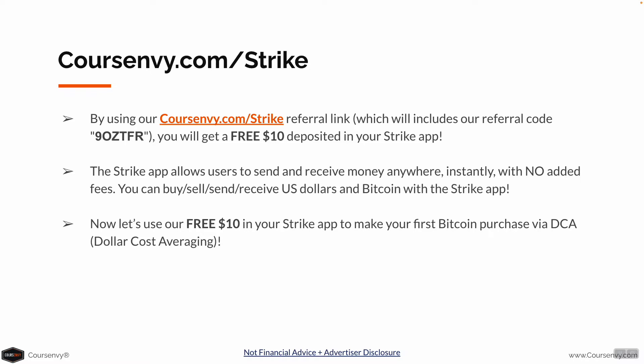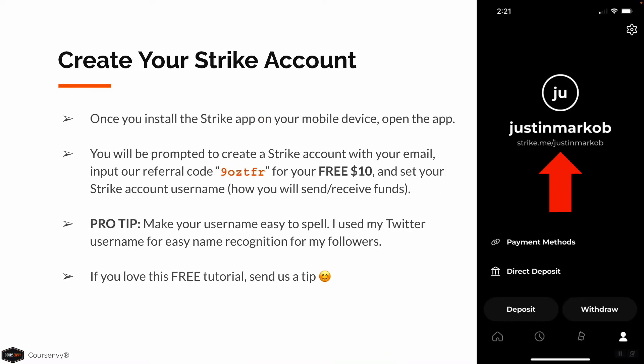Let's use your $10 in the Strike app to make your first Bitcoin purchase via dollar-cost averaging. Once you install the Strike app on your mobile device and open it, you'll be prompted to create a Strike account with your email, input our referral code for your free $10, and set your Strike account username. This is how you can send and receive funds, similar to Venmo. Pro tip: make your username easy to spell — I used my Twitter username for easy name recognition.